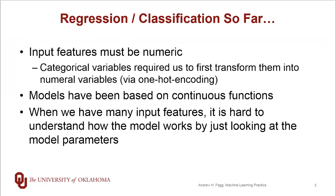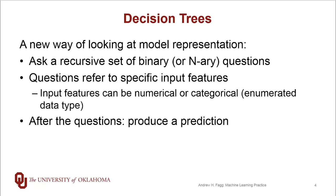We'd like to be able to relax some of these assumptions. A decision tree is fundamentally a recursive set of questions. These questions can be binary — either yes or no — or they can be n-ary in the more general case. For many decision tree algorithms, the questions refer to individual features. However, these features can be either numerical or categorical, which is a difference from our previous modeling approaches. Once the decision tree asks a number of questions, it produces a prediction of some form.